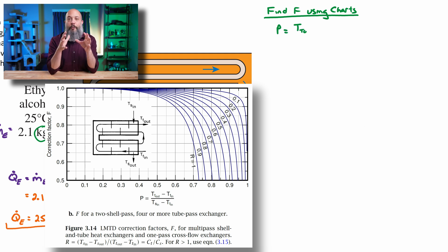Just follow very carefully the picture for the figure that's in your textbook. So in the one I am using for this video, we've got T_t,out minus T_t,in over T_s,in minus T_t,in, that is P.